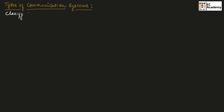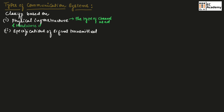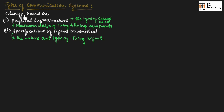We can classify communication systems based on physical infrastructure and specifications of the signal transmitted. Physical infrastructure refers to the type of channel used and hardware design of transmitting and receiving equipments. Specifications of signal transmitted refers to the nature and type of the transmitting signal.